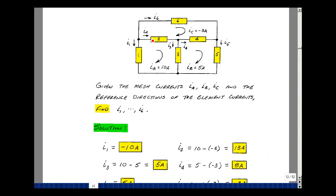The current i2 is between two meshes. It agrees with i_a, disagrees with i_c. We're going to add i_a and subtract i_c. Even though that's a negative number, we're going to subtract its value. That gives me 13 amps.